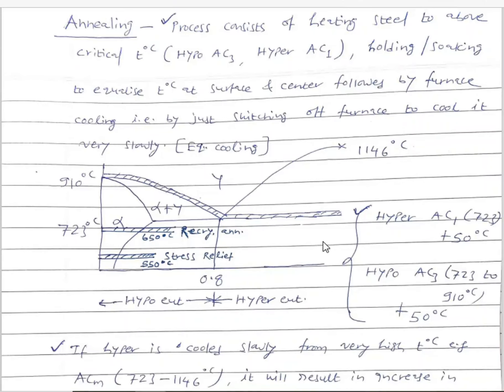This is the eutectoid portion of the iron-iron carbide diagram, which belongs to steel having carbon content less than 2%. The hypo-eutectoid steel will have upper critical temperature AC3 from 723 to 910 — the temperature at and above which 100% austenite is obtained. So from this temperature, hypo-eutectoid steels are always annealed. Hyper-eutectoid steels having more than 0.8% carbon are always annealed from just above AC1 temperature.